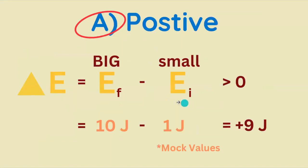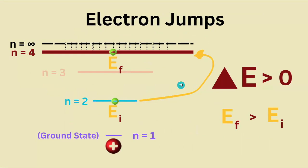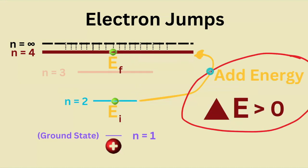Well, it's going to be positive — in other words, greater than zero. Because in order to go from, for example, 1 joule to 10 joules, that's a positive change of 9 joules of energy, and that's exactly what happens to our electron when it jumps from the n equals 2 to the n equals 4 state. It's going from a low energy to a high energy, so we must add energy. Thus, the terms 'add energy' and 'positive change in energy' are synonymous.